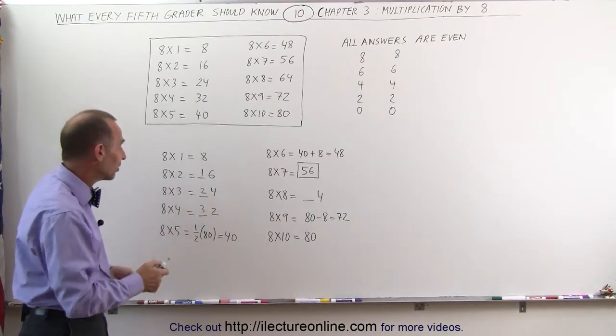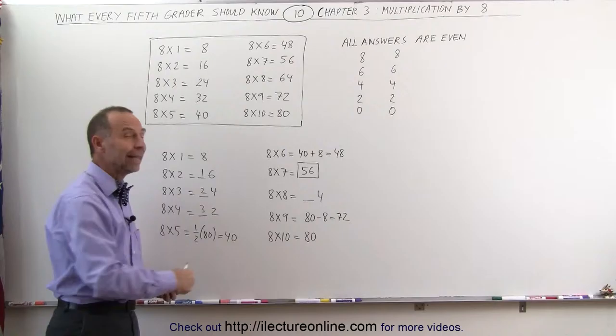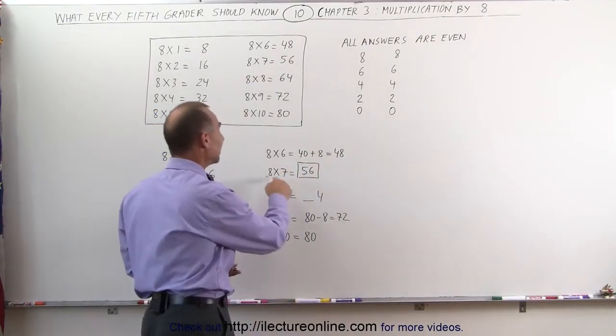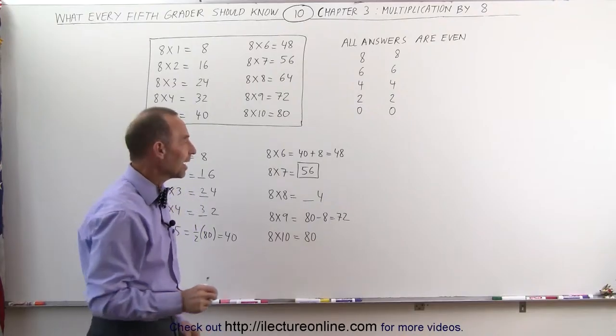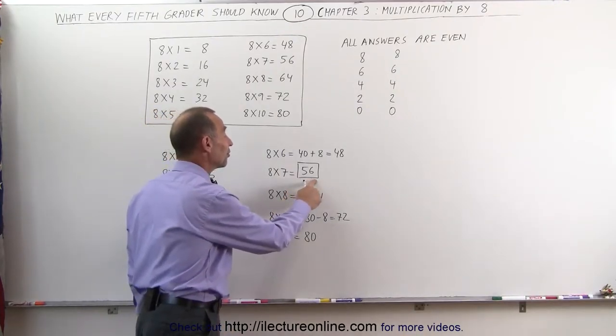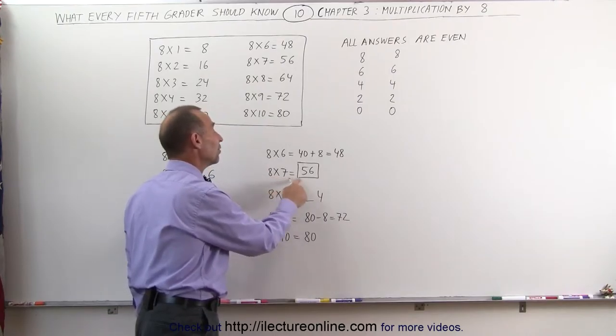Then when we go to 8 times 6, we take the halfway point and add another 8 to that. So 40 plus 8 is 48. 8 times 7, there's that neat little trick again that my wife used on our kids, where we remember the numbers 5, 6, 7, and 8. So 8 times 7 is 56.